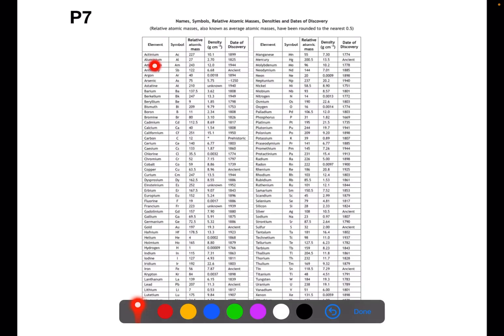Page seven has an alphabetical list of all of the elements. Beside them we have the symbol and then the relative atomic mass. This is a very useful page to look at when you're calculating gram formula mass.